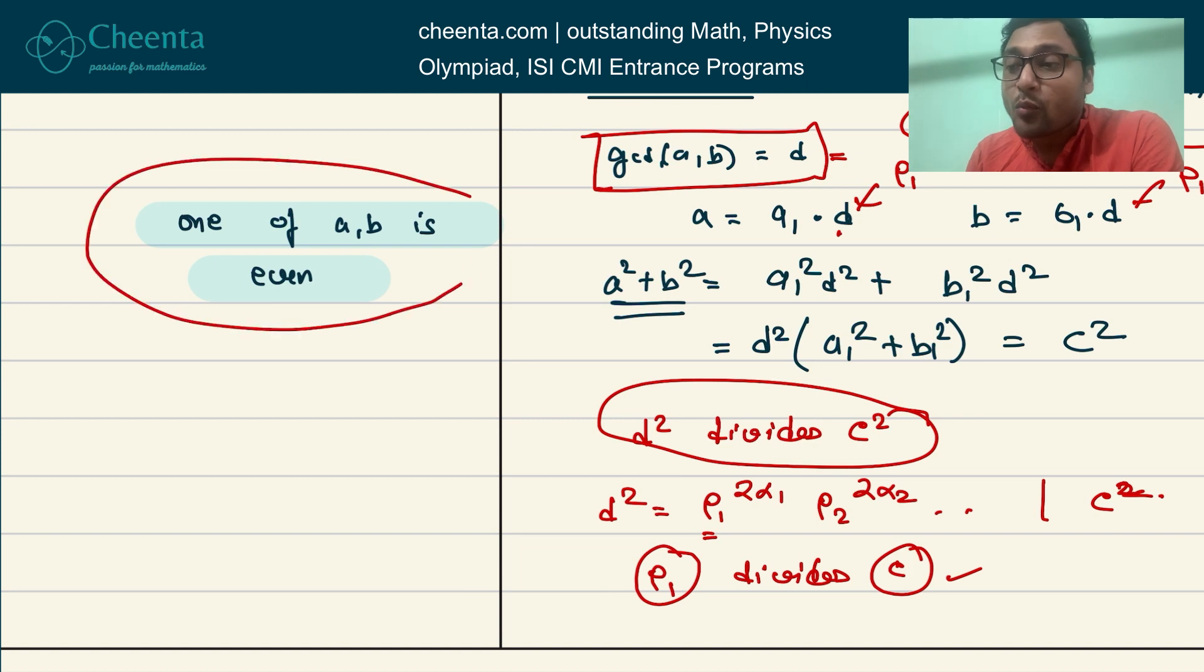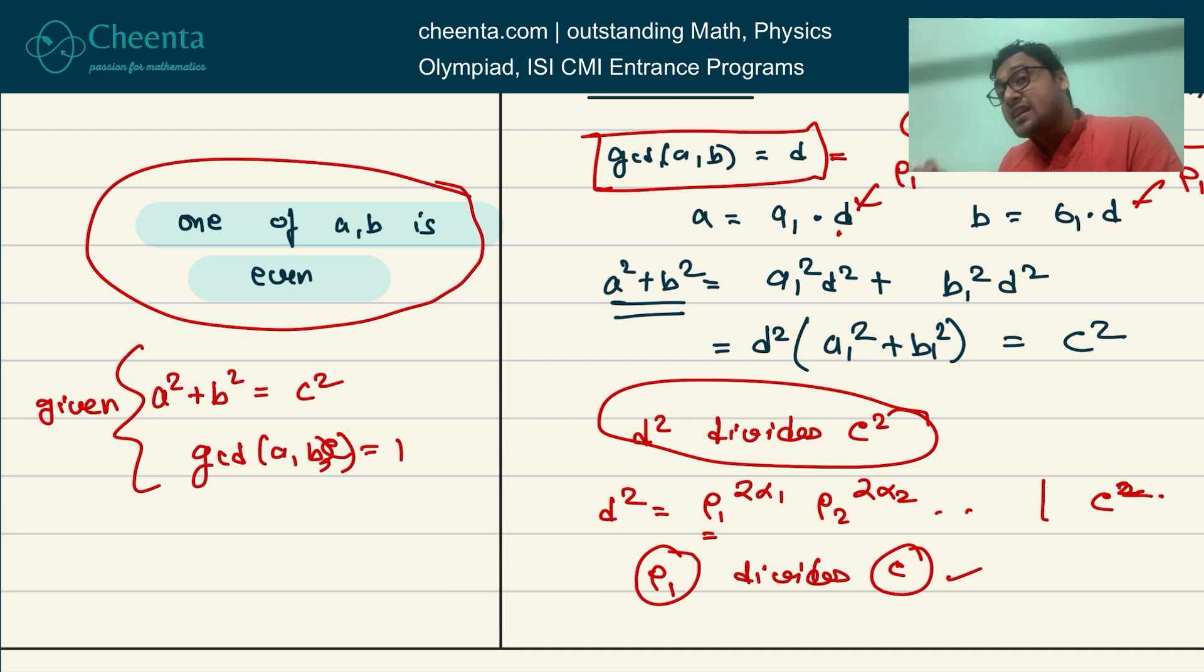Now I'll give you a challenge problem which we will solve in the next episode on Pythagorean primitives. It is like this: one of the numbers A and B is even. If A, B, C is a Pythagorean primitive—that is, if A² + B² = C² and if GCD of A, B, C is equal to 1—if both of these data are given, then you can conclude that either A or B must be even.